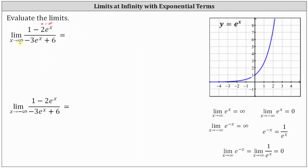Similarly, in the denominator, e to the x approaches infinity as x approaches infinity, but because we have negative three times e to the x, negative three times e to the x approaches negative infinity as x approaches infinity. And six is not affected by x. So we have the indeterminate form of negative infinity divided by negative infinity.